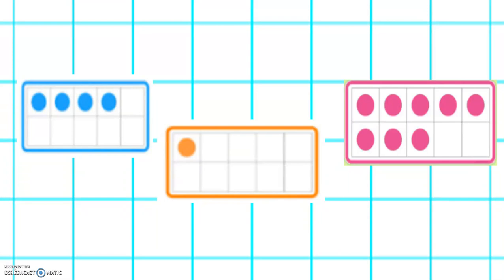Here are some tens frames. How many is this? Well done, it's four. How many is the orange? That's right, it's one. And how many is the pink? Well done, it's eight.